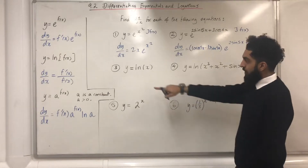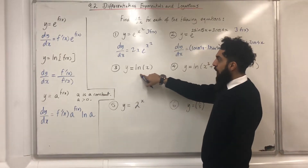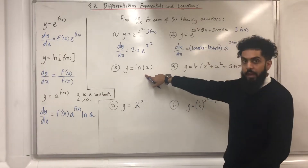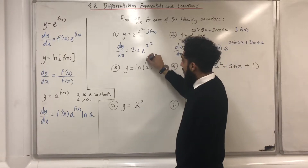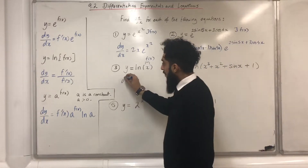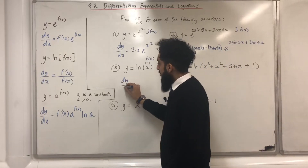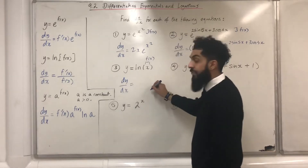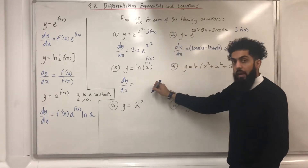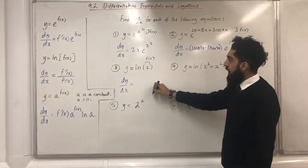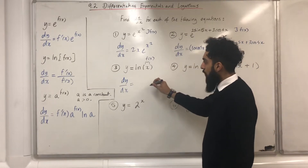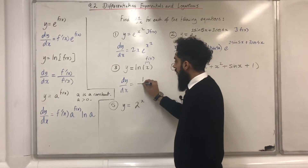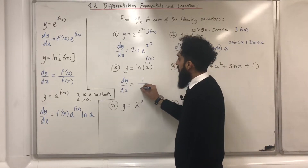Question number 3: y equal ln(x). The x is my f(x). dy/dx is equal to f'(x) over f(x). So if I differentiate x, I get 1 over x.